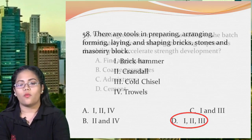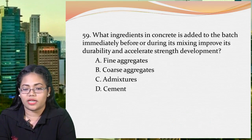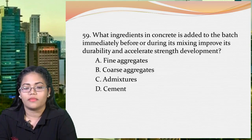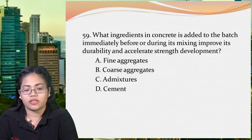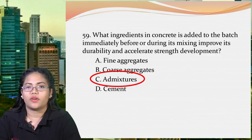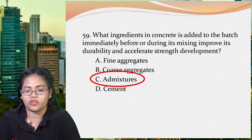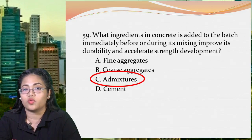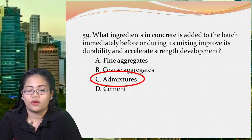Next question: what ingredient in concrete is added to the batch immediately before or during its mixing to improve its durability and accelerate strength development? A: fine aggregates, B: coarse aggregates, C: admixtures, D: cement. The correct answer is letter C, admixtures, because these are used to improve the behavior of concrete under a variety of conditions. Fine and coarse aggregates are inert materials that produce a compact mass, while cement is a bonding agent used in construction.